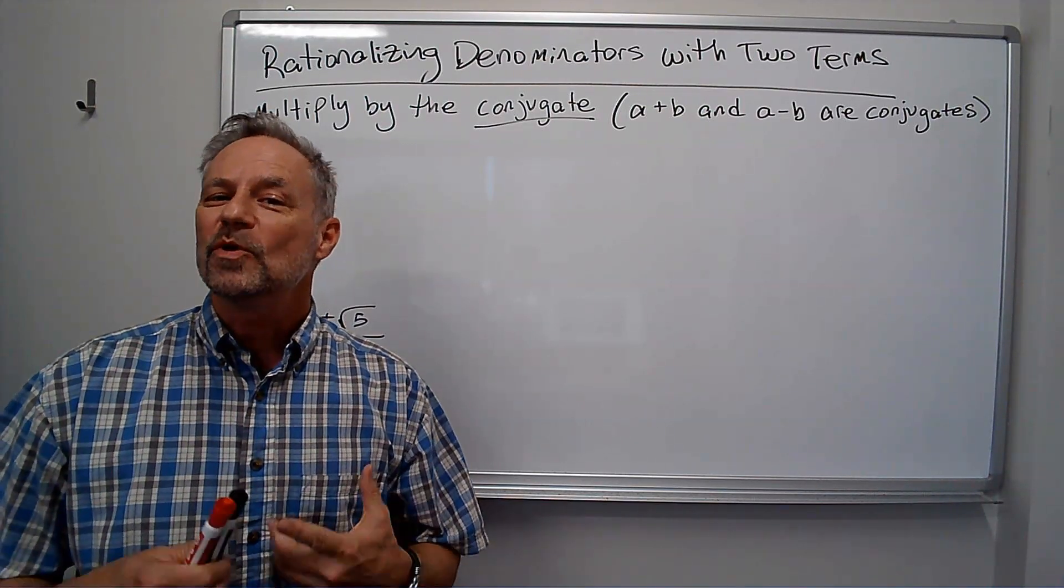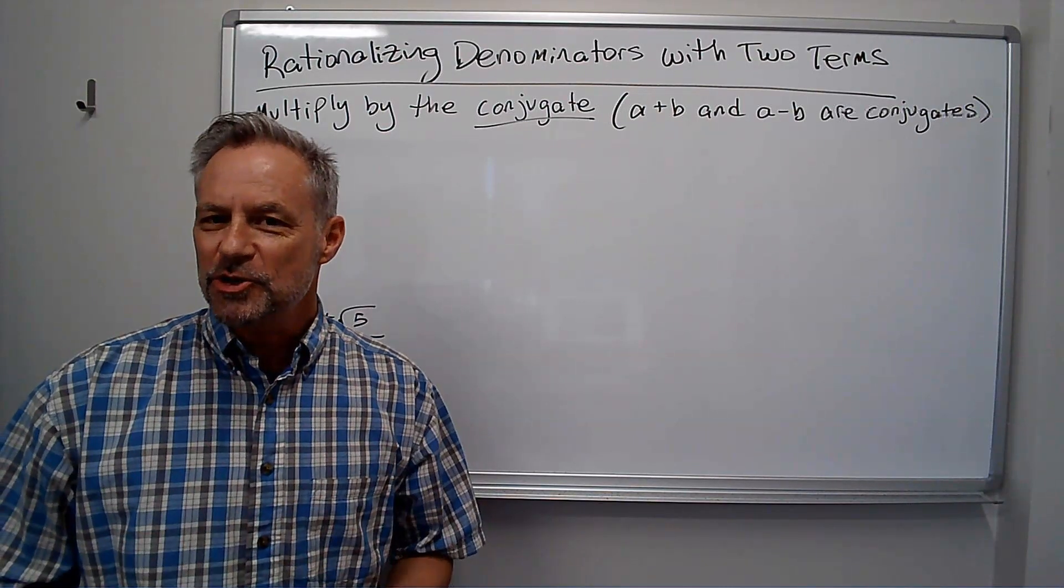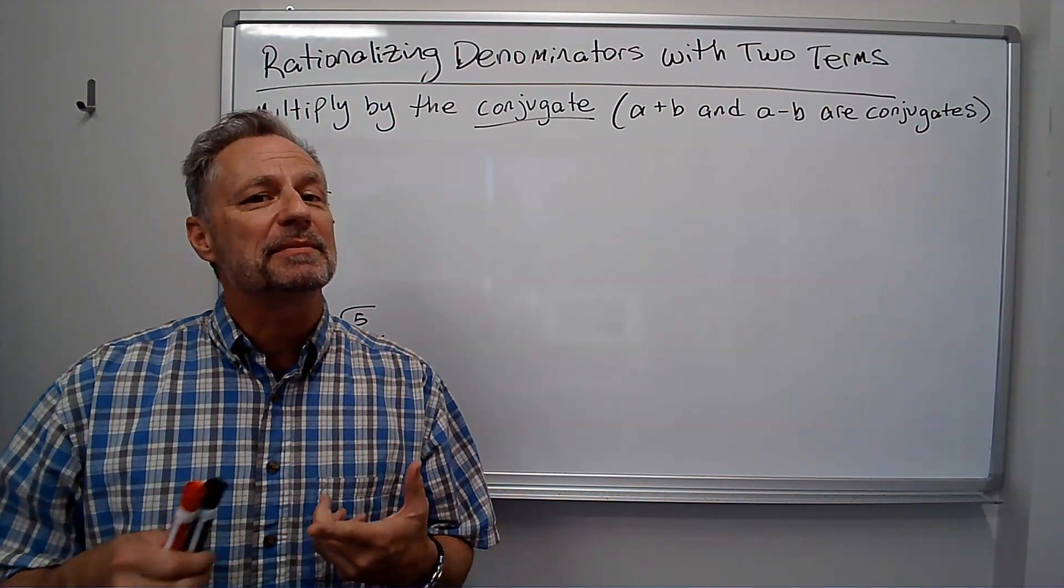Hi, it's Professor Monty. We're talking about rationalizing the denominator when there's two terms. The key to this is multiplying top and bottom by the conjugate.